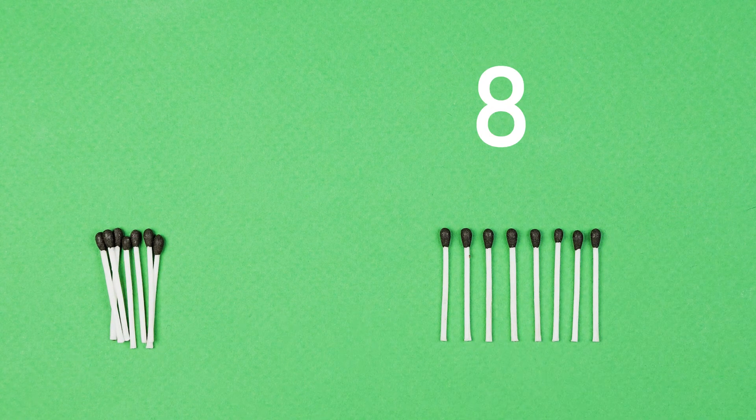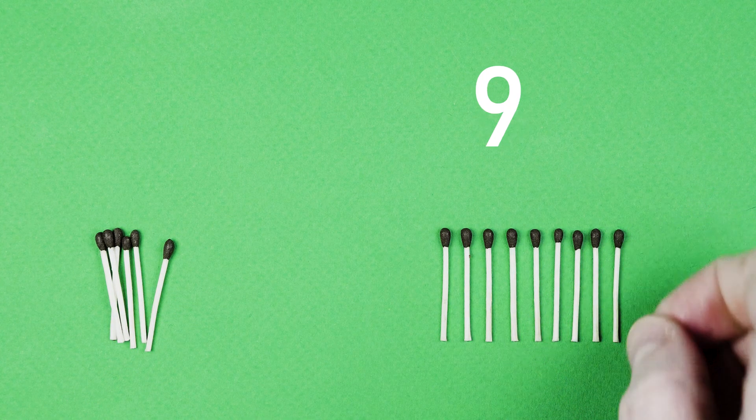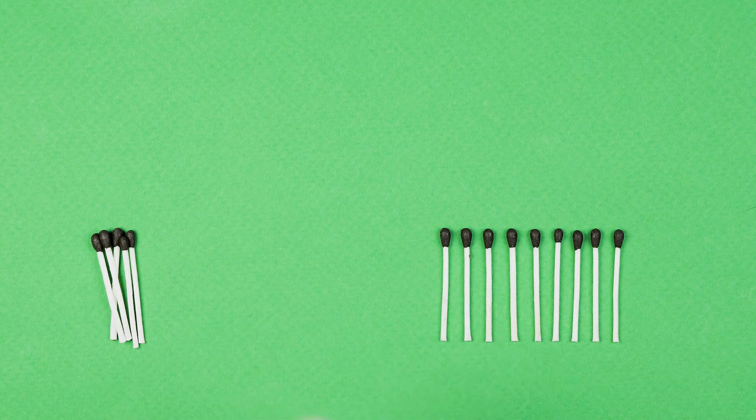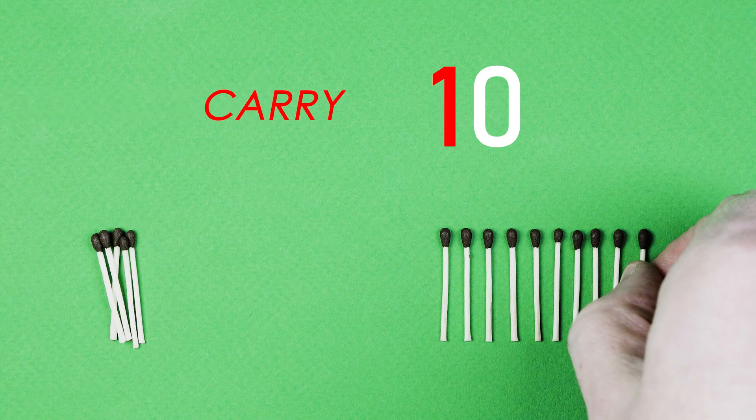So as we count from 1 to 9, we can get away with a single figure. But when we hit 10, we must transfer a digit from one column to the other, which in mathematics is referred to as carry.